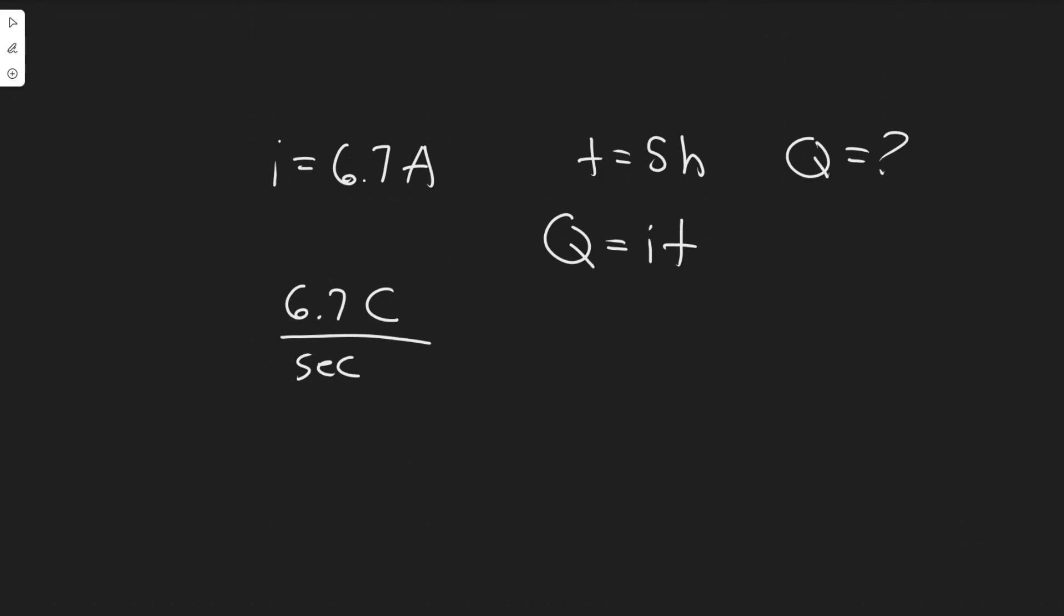So 6.7 Coulombs per second times, and we have five hours, but we have seconds here so we got to convert it. So five hours, we have five hours times 60 minutes per hour.